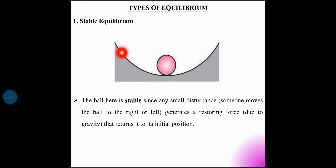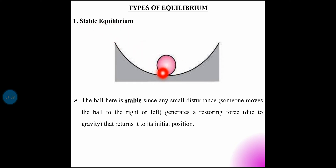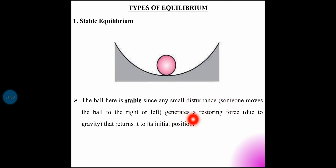This is an arrangement with a concave surface and a ball. When a disturbance is applied to the ball — to the right side and left side — the ball undergoes oscillation but returns to its initial position. The ball here is in stable equilibrium, since any small disturbance generates a restoring force that returns it to its initial position due to the action of gravity.